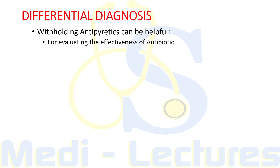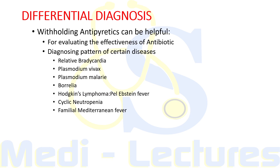If the patient is on long-term antipyretics, withholding antipyretics can be helpful in two ways: first, to evaluate whether the antibiotic is effective; and second, to help diagnose the pattern of certain diseases. For example, relative bradycardia is seen in typhoid, brucellosis, and leptospirosis, as well as in drug-induced fever and factitious fever. Plasmodium vivax is characteristic because fever rises every third day.